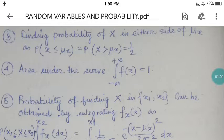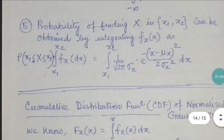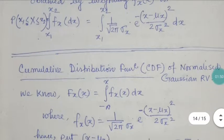The probability of finding x in the range x1 to x2 can be obtained by integrating f(x): P(x1 ≤ x ≤ x2) = integral from x1 to x2 of f(x) dx. The Gaussian distribution is a bell-shaped function: f(x) = (1 / (√(2π) σ_x)) × e^(-(x - μ_x)² / (2σ_x²)) dx. Integrating this gives the cumulative distribution function (CDF).